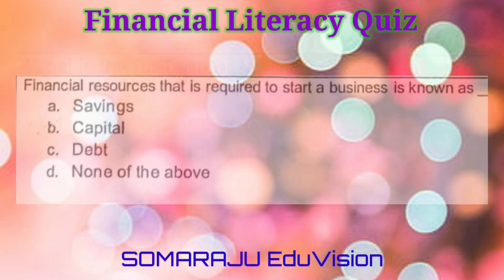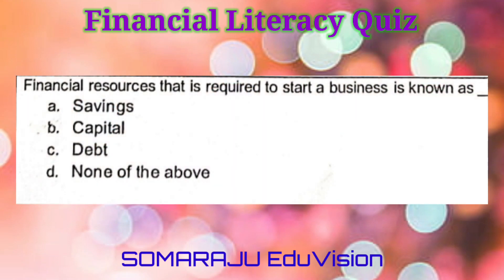Question number eleven: Financial resources that are required to start a business is known as A. Savings, B. Capital, C. Debt, D. None of the above. The correct answer is B. Capital.